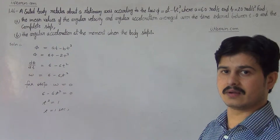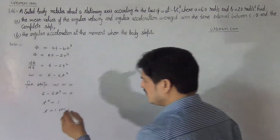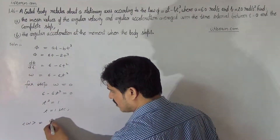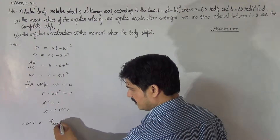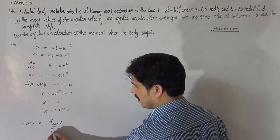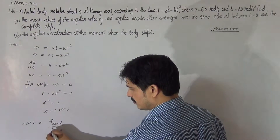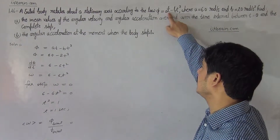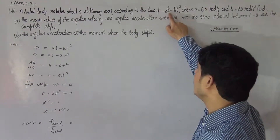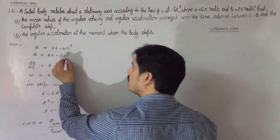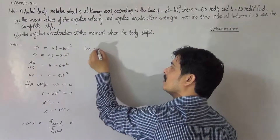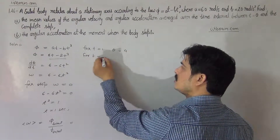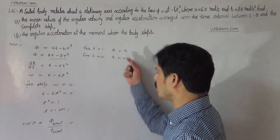In that 1 second interval, we calculate the mean. By definition, mean angular velocity is defined as total angle covered divided by total time. The total angle covered in this 1 second interval: at T = 0, φ = 0; and at T = 1, φ = 6(1) - 2(1)³ = 4 radian. So the total angle covered is 4 radian.